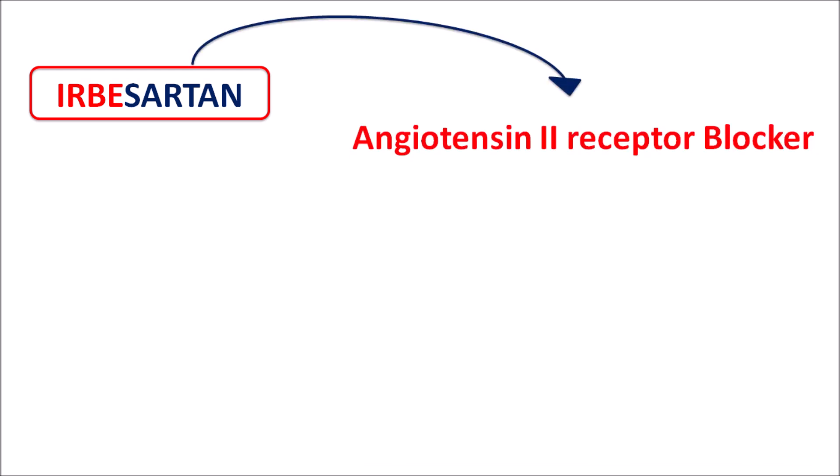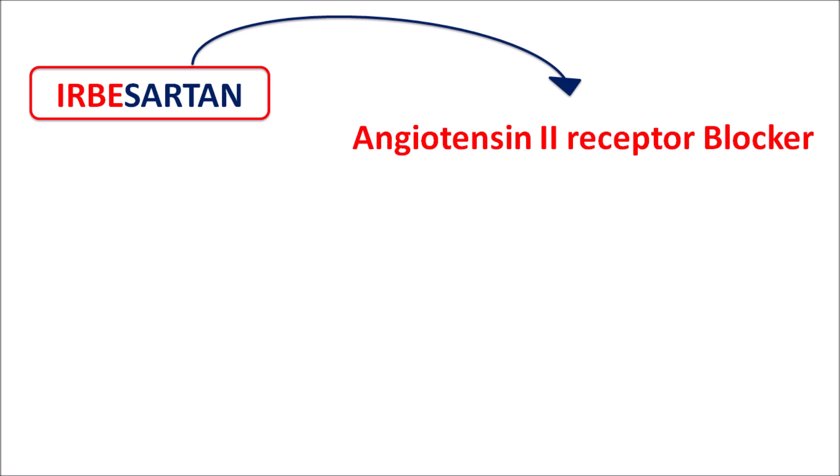What is this drug Irbesartan? The suffix 'sartan' indicates this drug is an angiotensin 2 receptor blocker, commonly known as ARB. And since this drug inhibits the renin-angiotensin system by blocking the actions of angiotensin 2, this drug is particularly used in the treatment of hypertension.